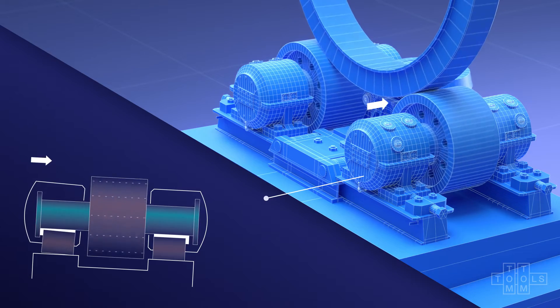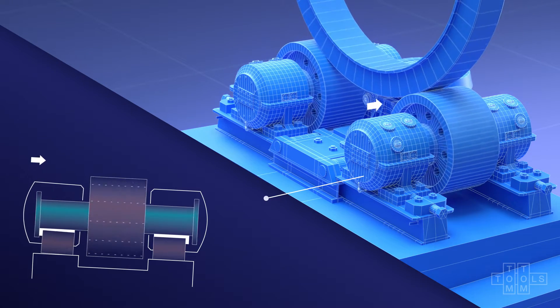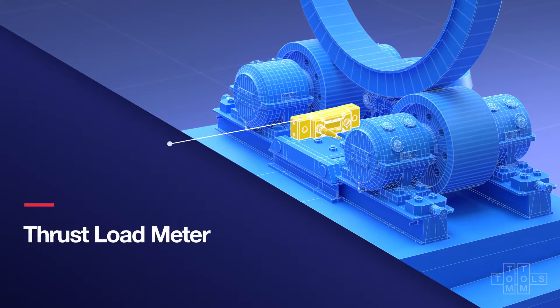The loaded bearings tilt slightly, influenced by both stiffness and applied forces. While this effect is small, it can be measured using the thrust load meter.